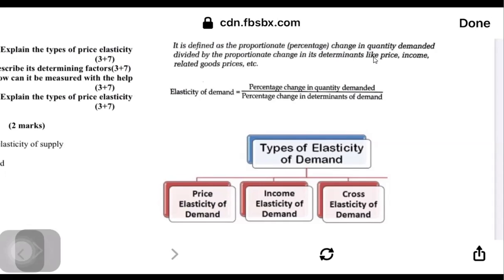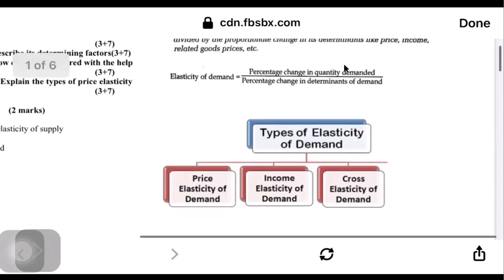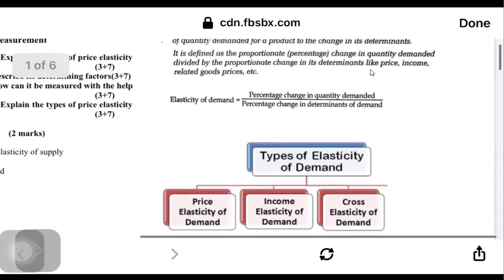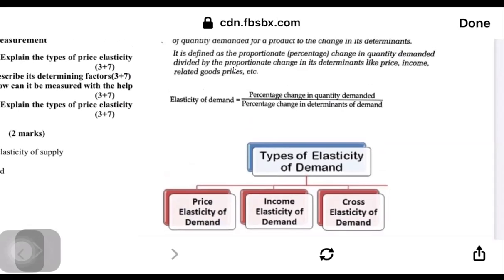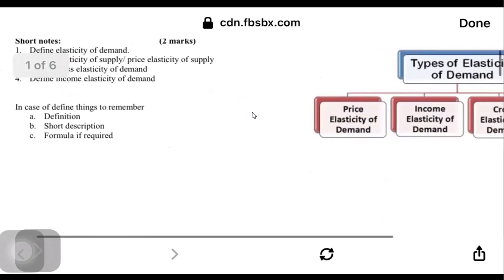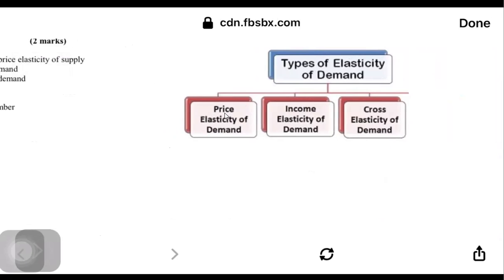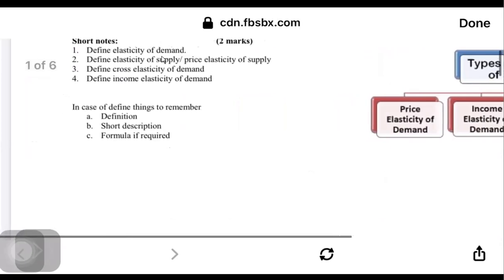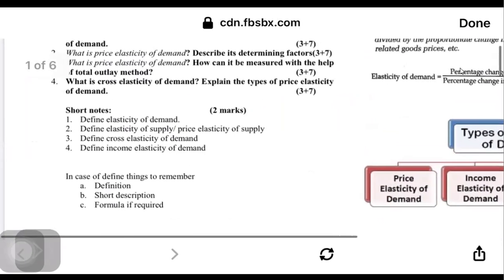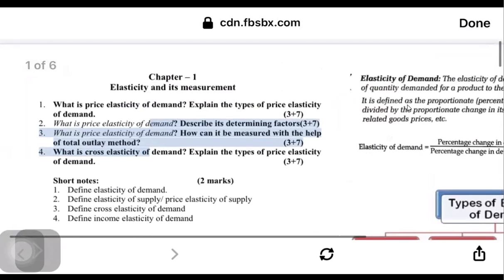For income elasticity of demand, the denominator becomes the income of the consumer. For cross elasticity of demand, it becomes the proportionate change in the price of a related good. These are the three types: price elasticity of demand, income elasticity of demand, and cross elasticity of demand. If you learn this topic well, you can answer both two-mark and longer questions.